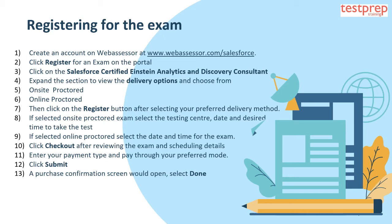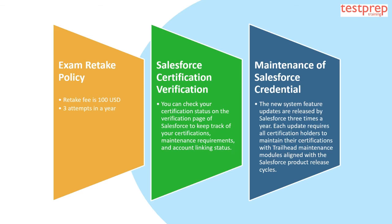Continue registration: click the Register button after selecting your preferred delivery method. If on-site proctored, select the testing center, date, and desired time. If online proctored, select the date and time. Then click Checkout after reviewing scheduling details, enter your payment type, and pay through your preferred mode. Click Submit — a purchase confirmation screen will open; select Done.